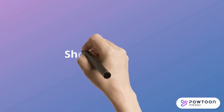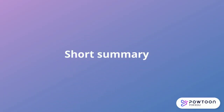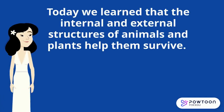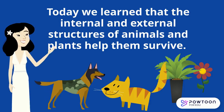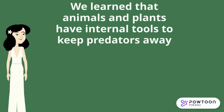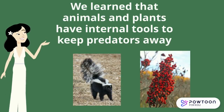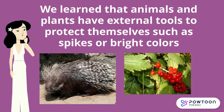Now let's briefly summarize what we have learned today. We learned that the internal and external structures of animals and plants help them survive. We learned that animals and plants have internal tools to keep predators away. We also learned that animals and plants have external tools to protect themselves, such as spikes or bright colors.